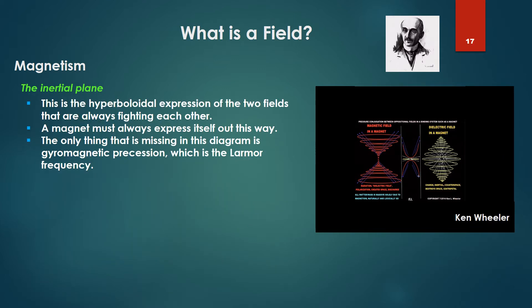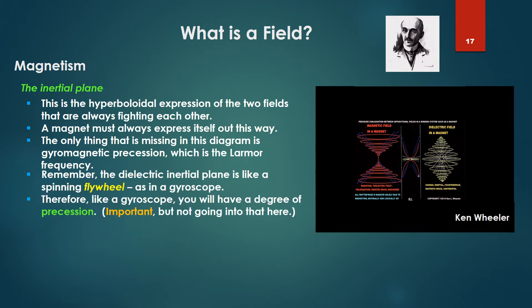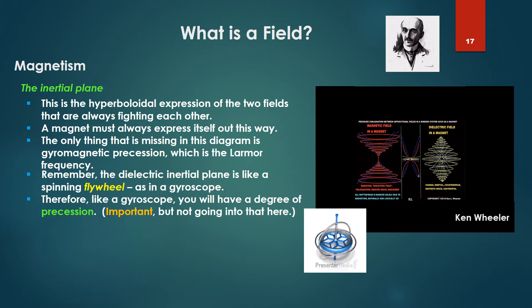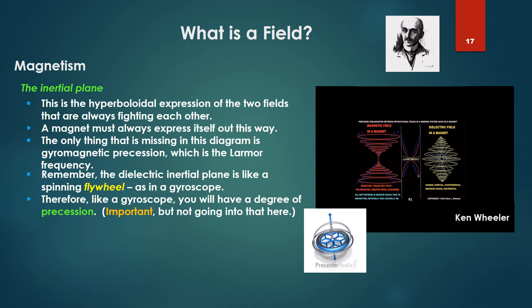This is the hyperboloidal expression of the two fields that are always fighting each other. A magnet must always express itself this way. The only thing missing in this diagram is geomagnetic precession — the Larmor frequency of 49.6 megahertz. Remember, the dielectric inertial plane is like a spinning flywheel, as in a gyroscope. The mechanical analog of this magneto-dielectric field is the gyroscope; therefore, like a gyroscope, you'll have a degree of precession. This is an important aspect to the total dynamic.